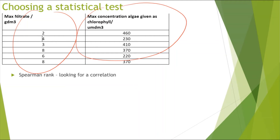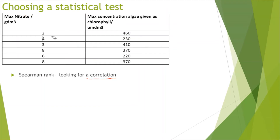This is because in this diagram we're looking for a correlation — as one factor is increasing, we're seeing if that would increase the other factor or decrease the other factor. So we're looking for a correlation in this case, and that's why we would choose Spearman rank.